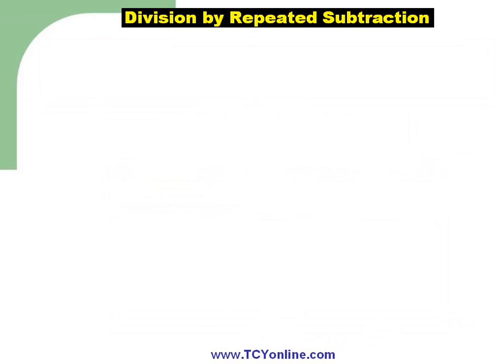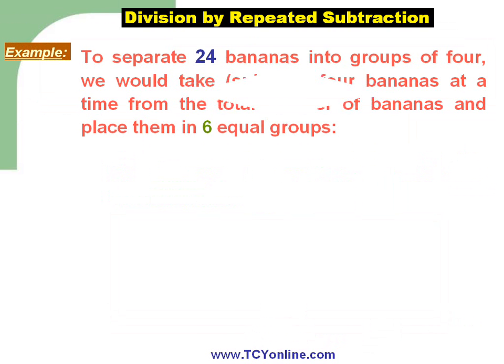Now let's learn about division by repeated subtraction. Let's take an example. We have to separate 24 bananas into groups of 4. We would simply take or subtract 4 bananas at a time from the total number of bananas.